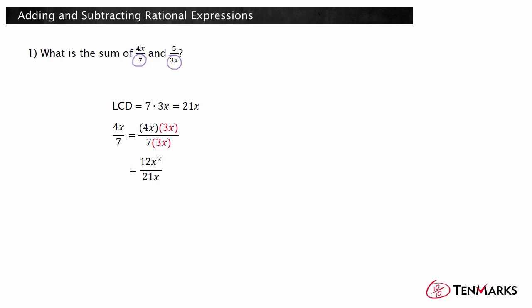Now let's look at the second term. Multiply the top and bottom of the expression by 7 to write an equivalent expression with the LCD. You get 35 over 21x.